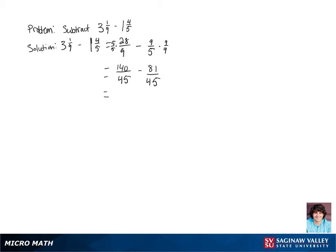Now when we do this subtraction, we're going to be left with 59 over 45, and we can just see intuitively that 45 goes into 59 once.